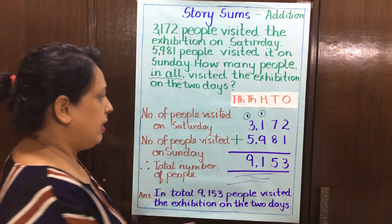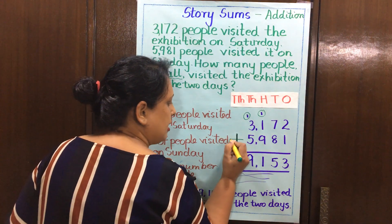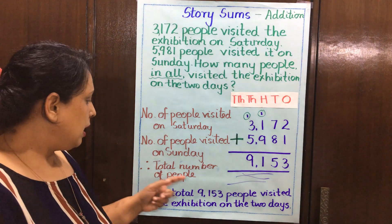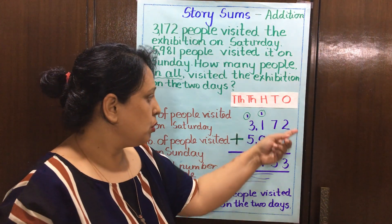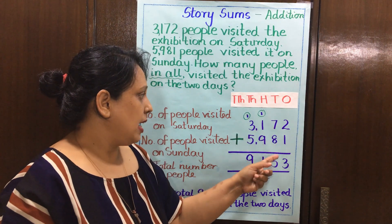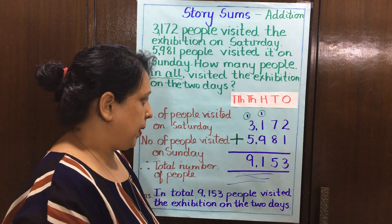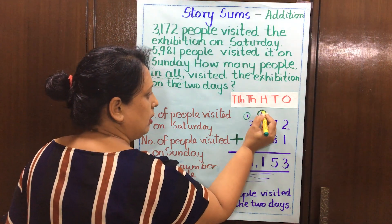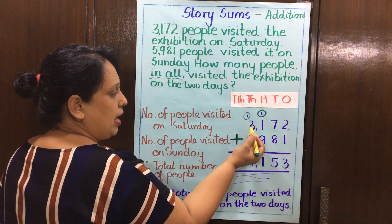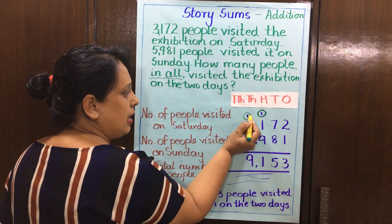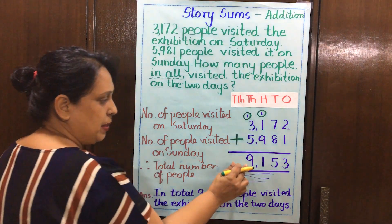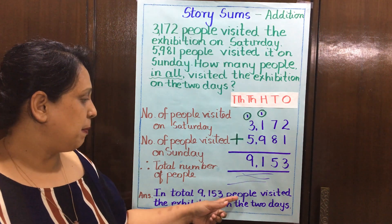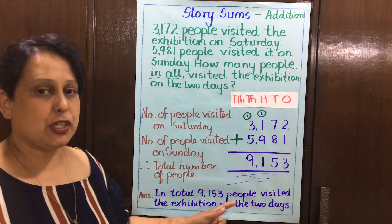I know 'in all,' therefore it is an addition sum. Therefore, total number of people: I add up — 2 plus 1 is 3. 7 plus 8 is 15, I carry over 1. 9 plus 1 is 10, plus the carry over gives 11 — write 1 carry 1. 3 plus 5 is 8, plus the carry over 1 gives me 9. In total, 9,153 people visited the exhibition on the two days.